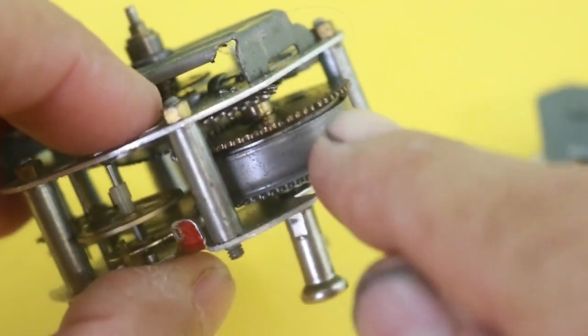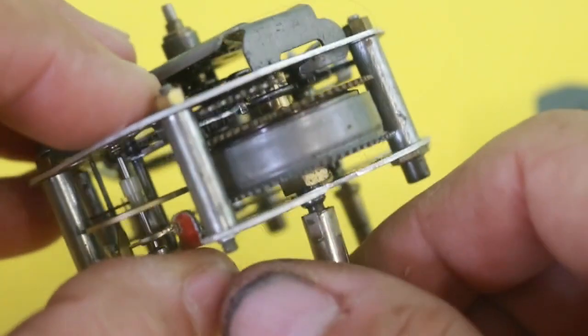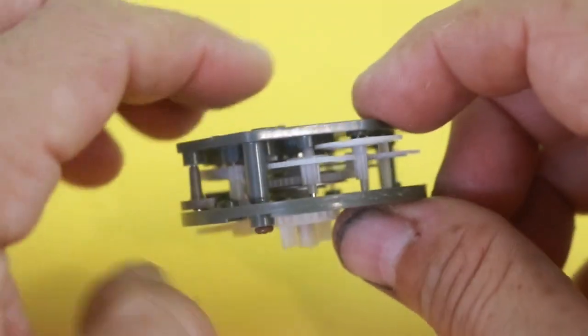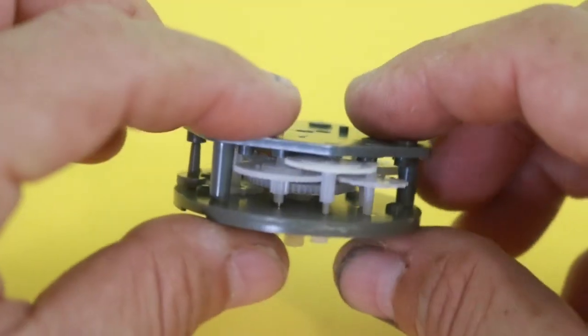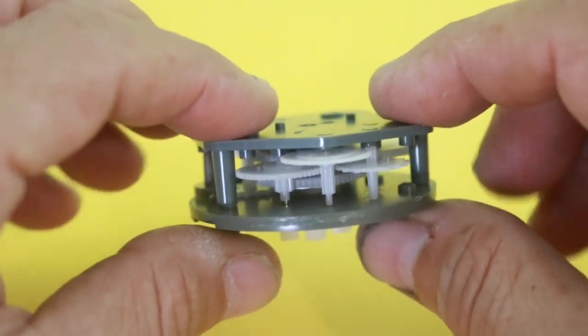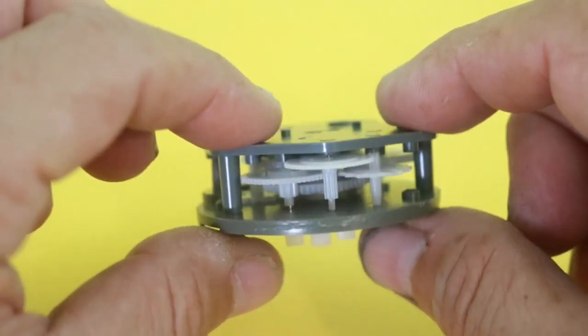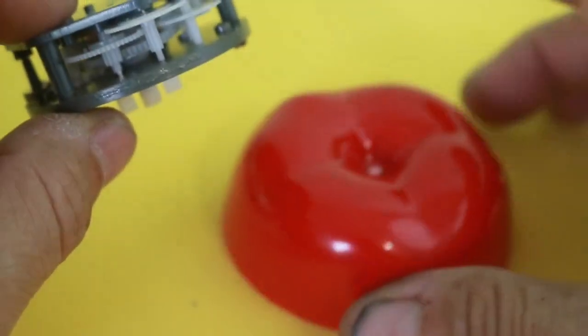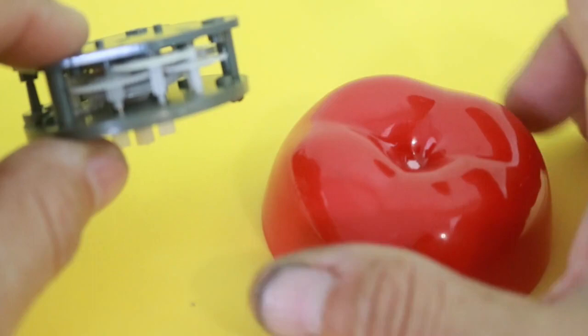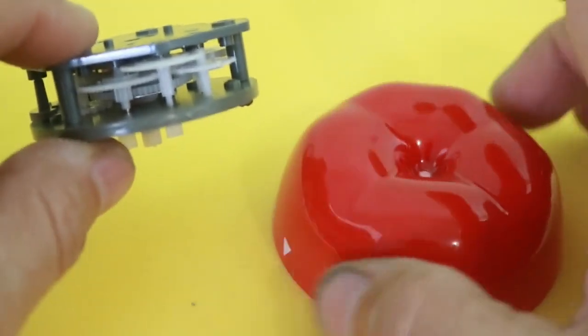Here you can see the spring. This is the main spring where the energy is stored, and then the spring moves a set of gears. You have several gears, one after another, and that is needed to reduce the speed and make the movement very slow. You need the cap to turn a complete turn in one hour, so it is a very slow movement.